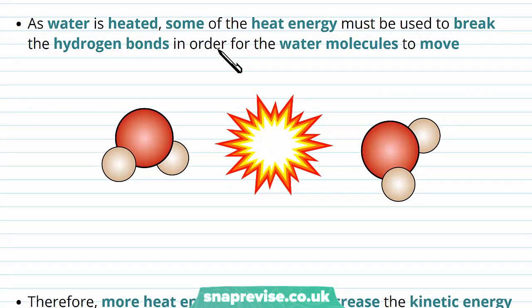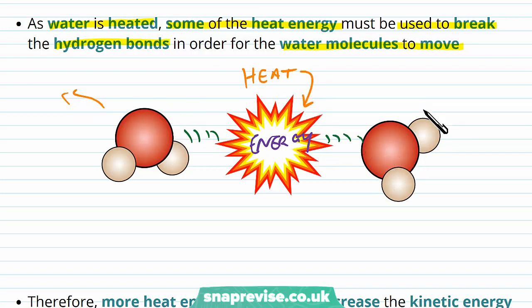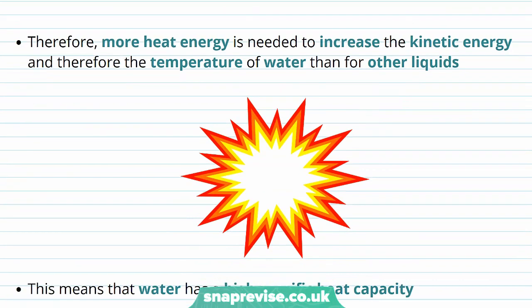If we wanted to increase the temperature of water to increase its kinetic energy, some of the heat energy must be used to break the hydrogen bonds in order for the water molecules to move. We have water molecules held by hydrogen bonds, and because they're intermolecular forces, they require energy to be put in to break. We need to add heat energy to break them, separating the molecules out into their environment and making it more of a gas than a liquid. Because hydrogen bonds are very strong, more heat energy is needed to increase the kinetic energy, and therefore the temperature of water is higher to boil than for other liquids of the same size.